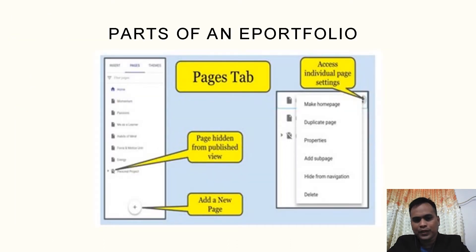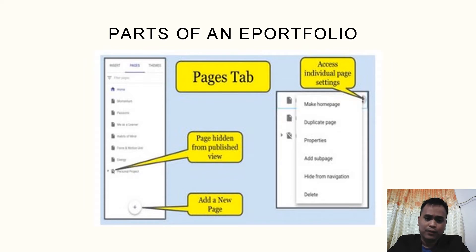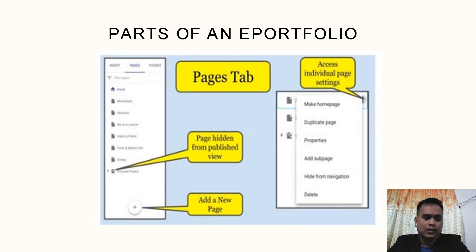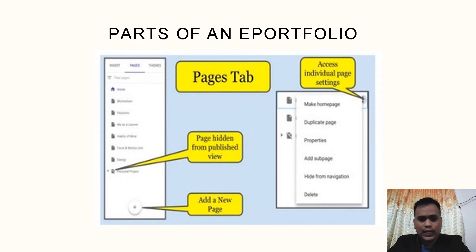Parts of an e-portfolio: we have the Pages tab. There are some pages that can be hidden from a published view, and we can also add a new page. We can also access individual page settings. The Google Sites platform is very user-friendly and easy to use and manage.